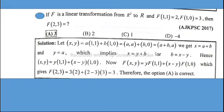We get x = a + b and y = a, which implies x = y + b. So b = x - y. Hence (x,y) = y(1,1) + (x-y)